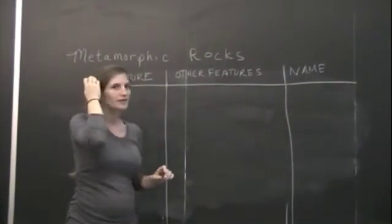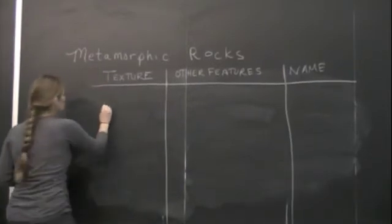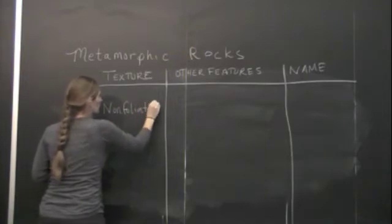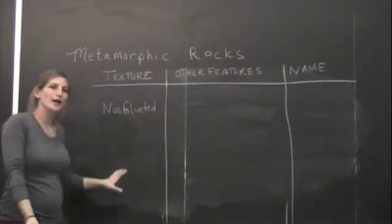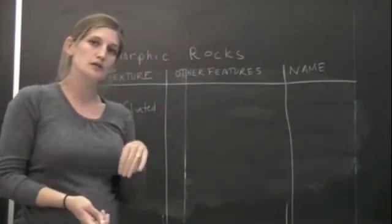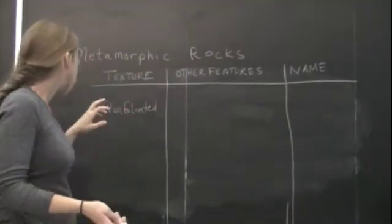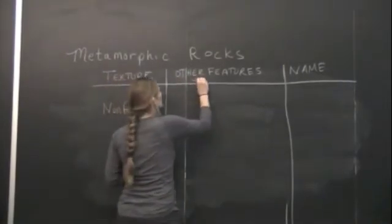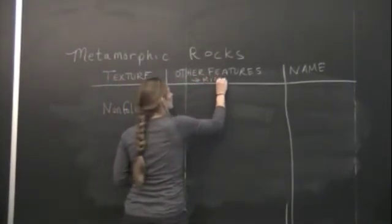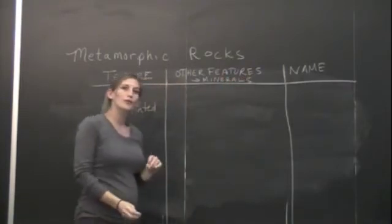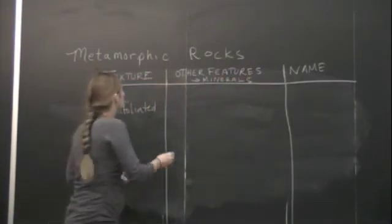When we start to look at the next group, these are all going to be non-foliated. So the texture category is not going to change. Non-foliated rocks can be fine-grained to coarse-grained. And what we're really going to do is focus on the other features. And this is really going to start to include the minerals.